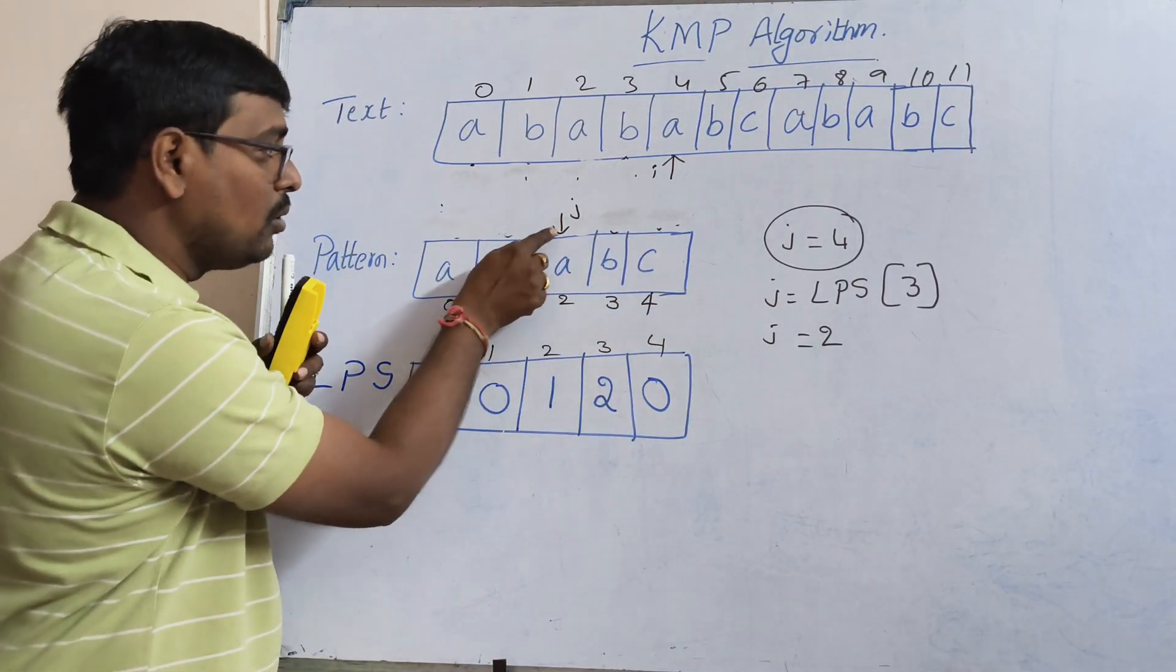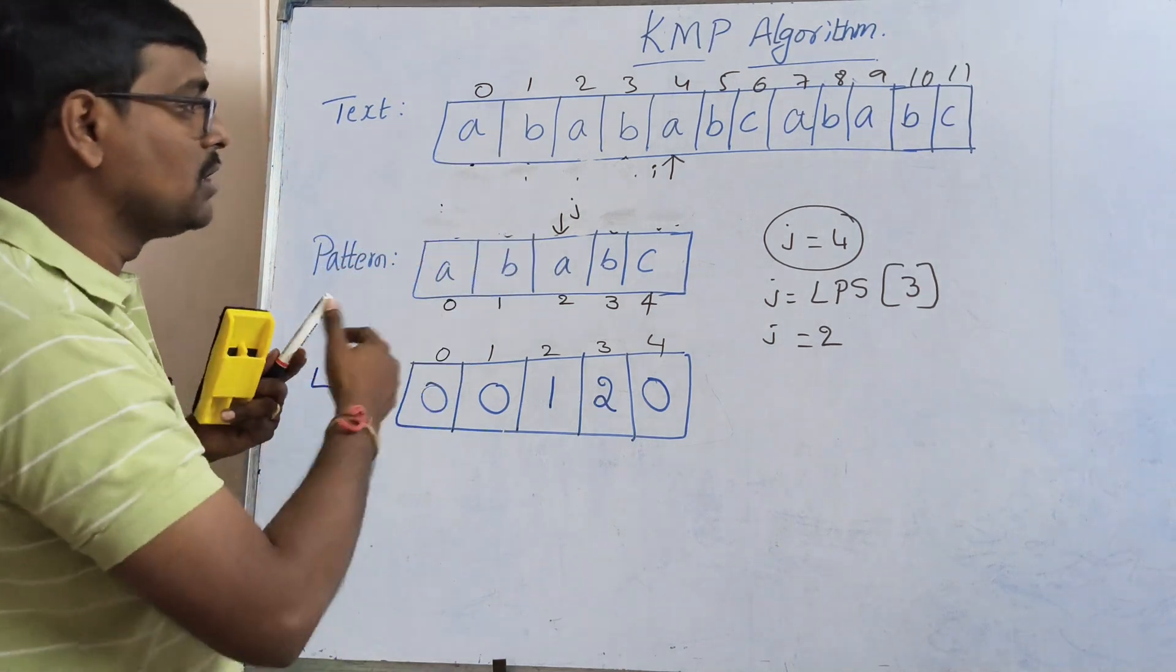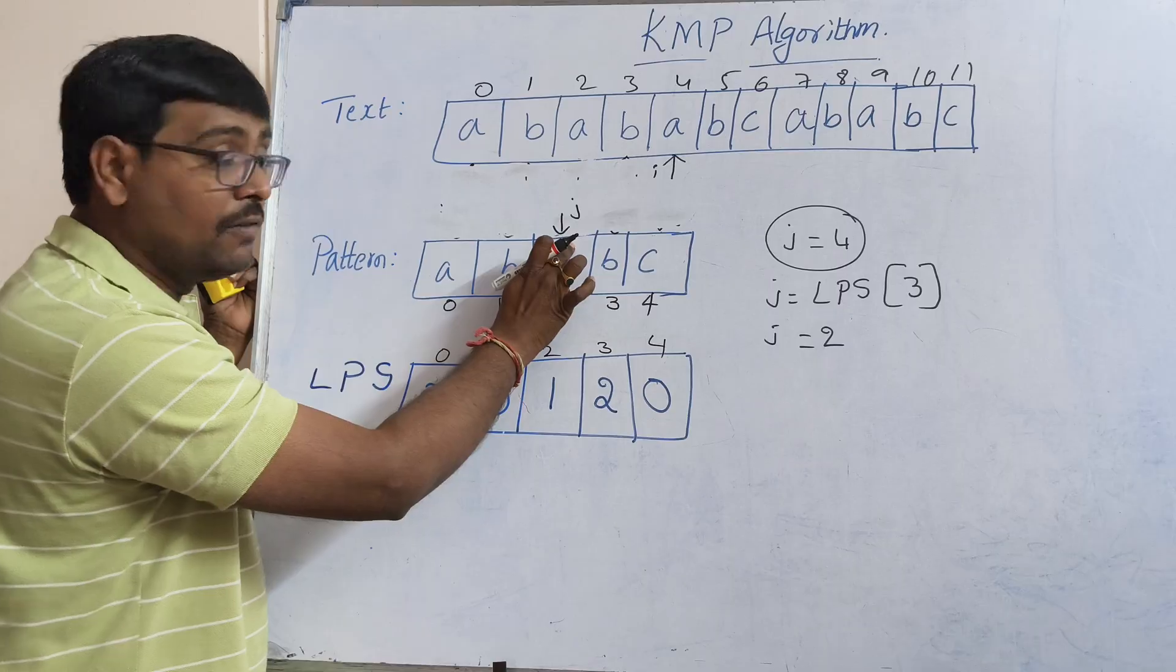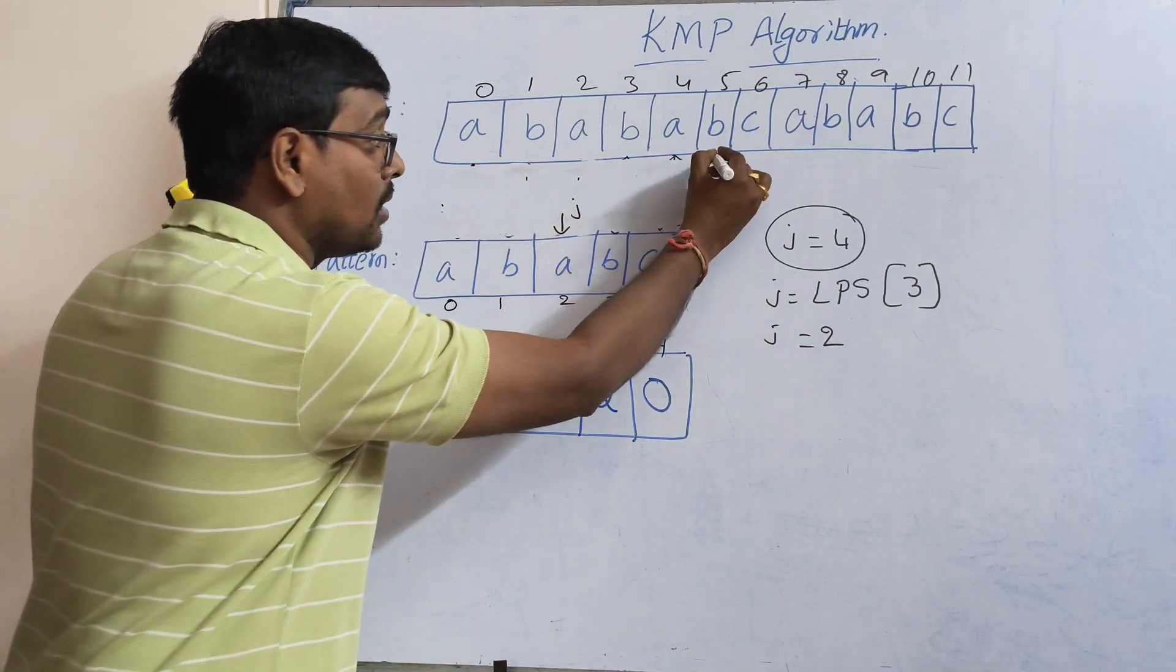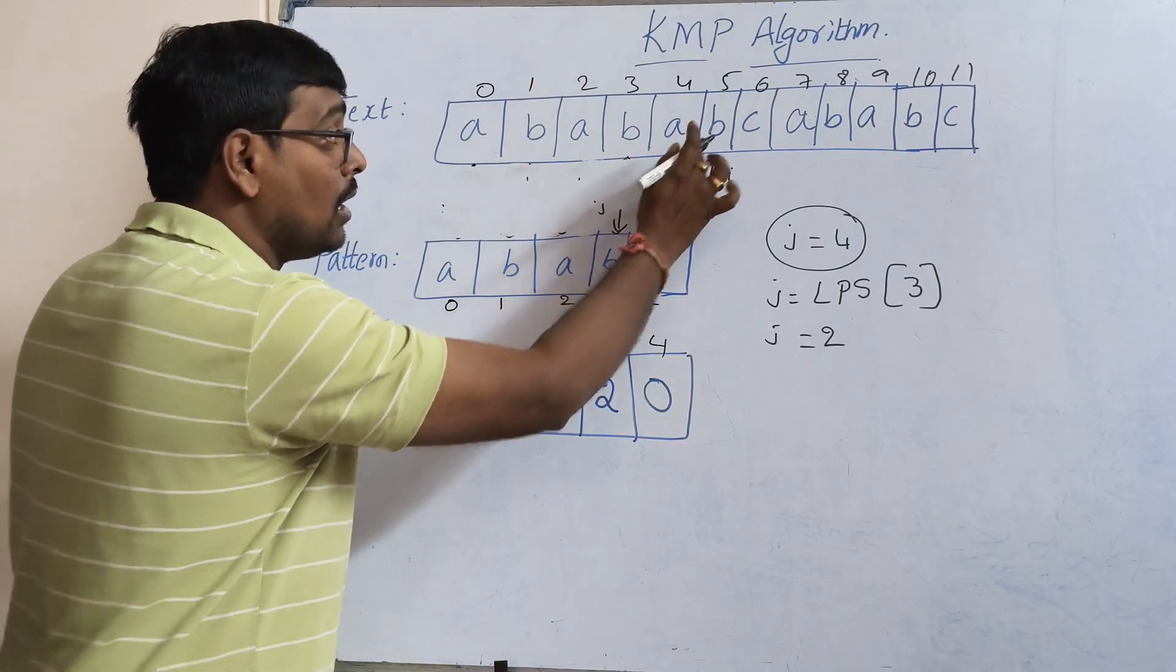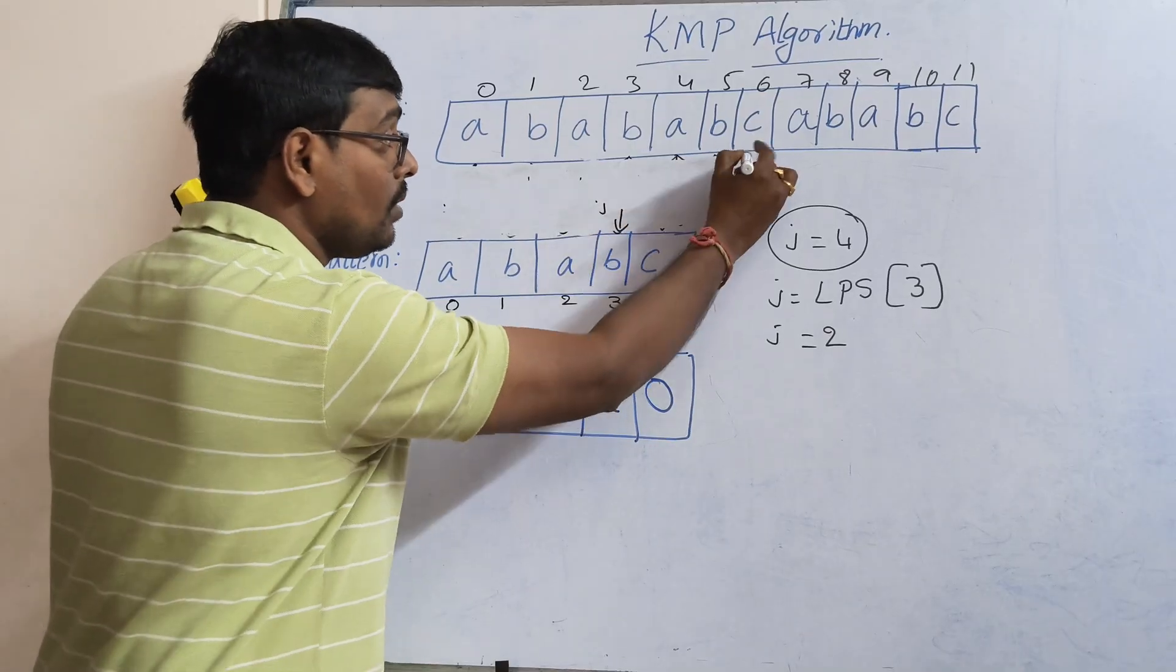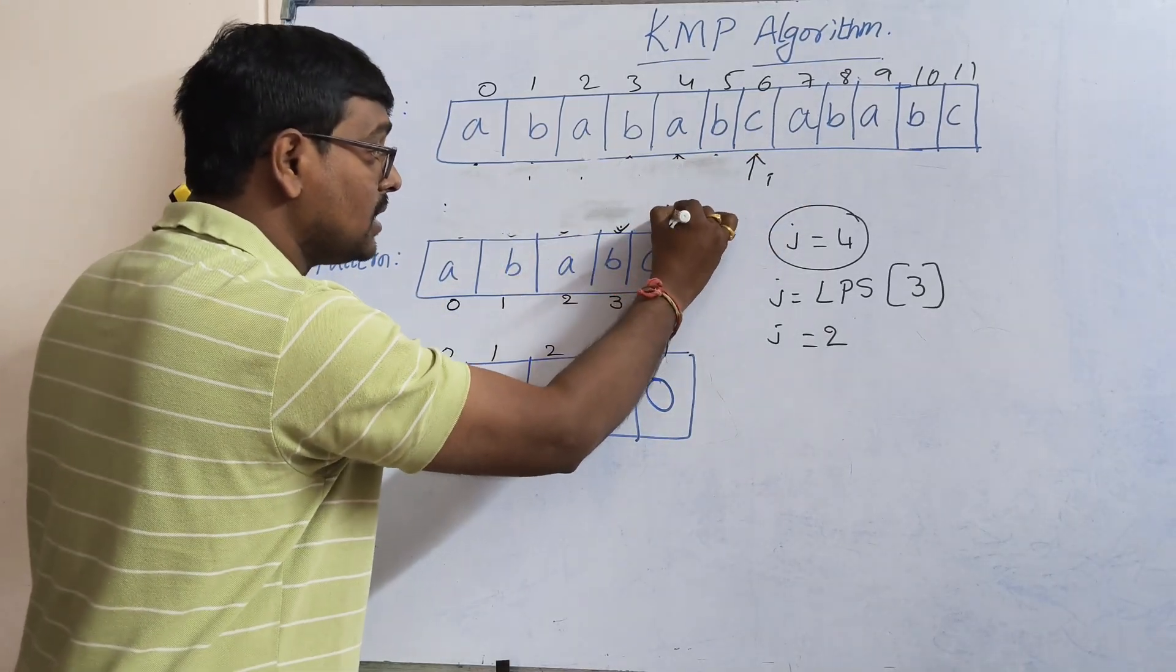Again I'm repeating: whenever mismatch occurred, we are updating the 'j' value according to the LPS table. Now 'j' is updated. 'j' moves here. We are doing our search operation from this position. Same concept. Now 'a' is compared with 'a'. 'i' is the fixed position. Again matching. This is the 'i' value, this is the 'j' value. Now 'b' is compared with 'b' - matching.